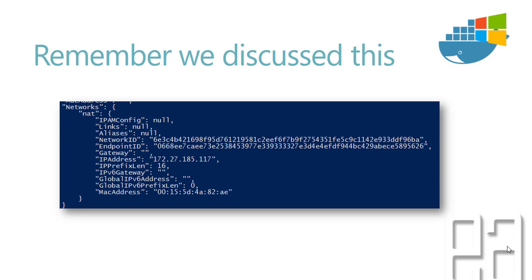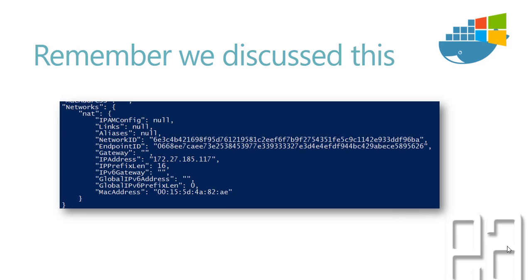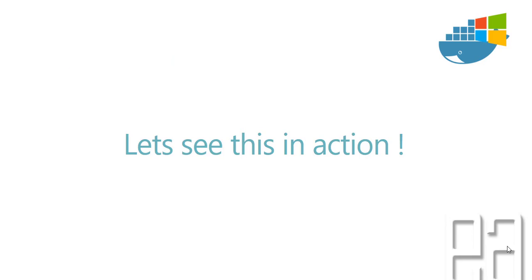We can use the name of the machine to access a particular container. Remember, we already discussed IP addresses in our previous videos — we used docker inspect with a running container ID and got a lot of JSON format output, including the network ID, IP address, IP prefix length, and IPv4 gateway. That's exactly what we're going to discuss now: how each container has its own IP address and how these addresses are useful when two or three containers need to communicate.